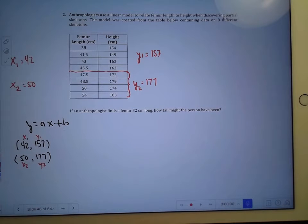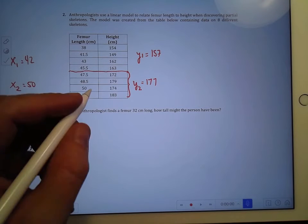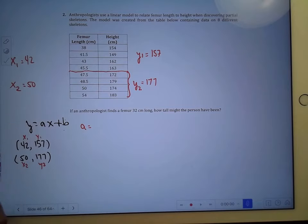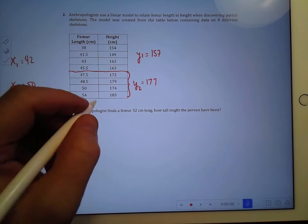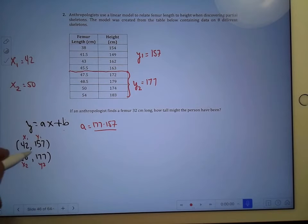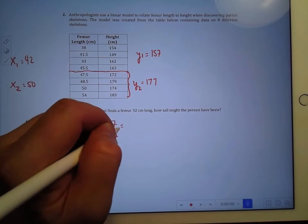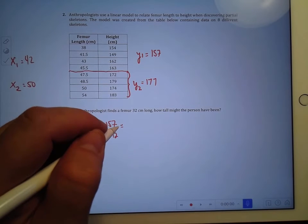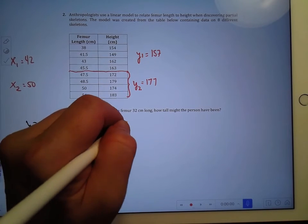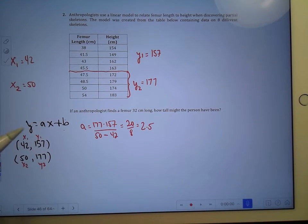So we're trying to find the equation of a line. What we're going to do is use the slope formula. Now that we have two points from the distribution, we can say, hey, a is equal to y2 minus y1, 177 minus 157, over 50 minus 42, which when you calculate that will give you 20 over 8, which is 2.5. So your a is 2.5.